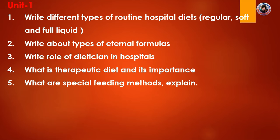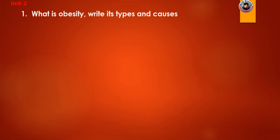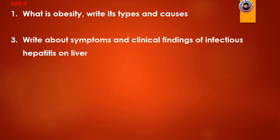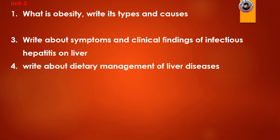Moving to Unit 2, the first question is: what is obesity — its types, causes, and food habits. The next question is: write about symptoms and clinical findings of infectious hepatitis on the liver. Hepatitis has two forms — non-infectious and infectious — including Hepatitis B virus. The third question asks about clinical findings of infectious hepatitis and liver disease.